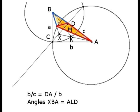Note that these two triangles have common angle LAB. From this it follows that angle LBA or XBA, which is the same angle, and angle ALD are equal. Let's remember this result to use it later.